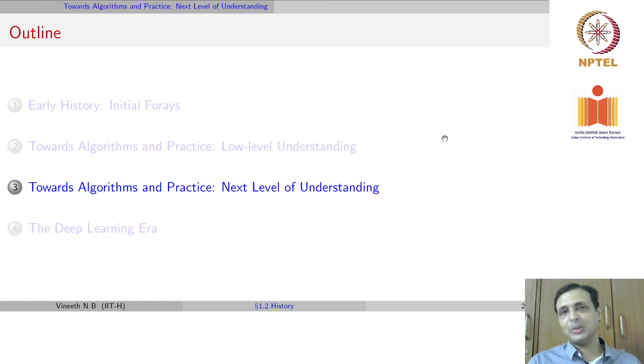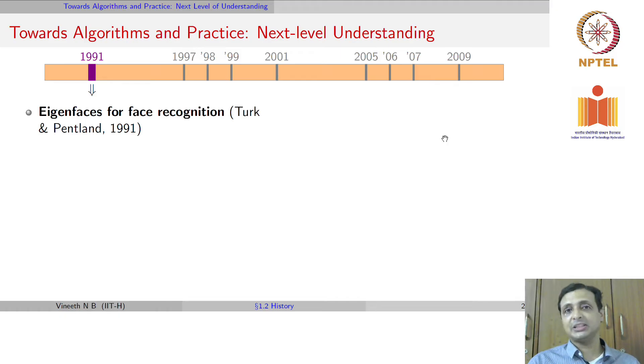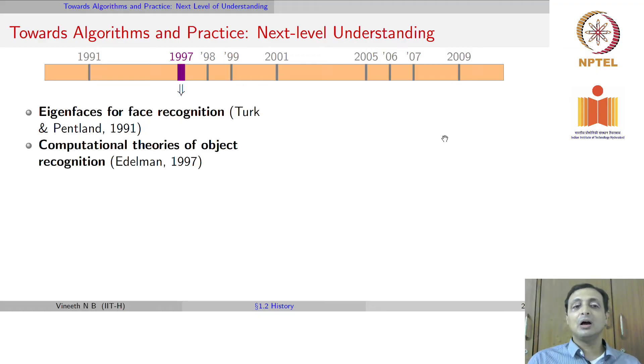Then came the 1990s where the community stepped into a higher level of understanding beyond low level artifacts such as edges or corners. It started with eigenfaces for face recognition which used a variant of eigen decomposition for doing face recognition in 1991, which was successful at least in constrained settings. There were also computational theories of object detection by Edelman in 1997. Then came perceptual grouping and normalized cuts, which was a landmark step for image segmentation methods that came in 1997.